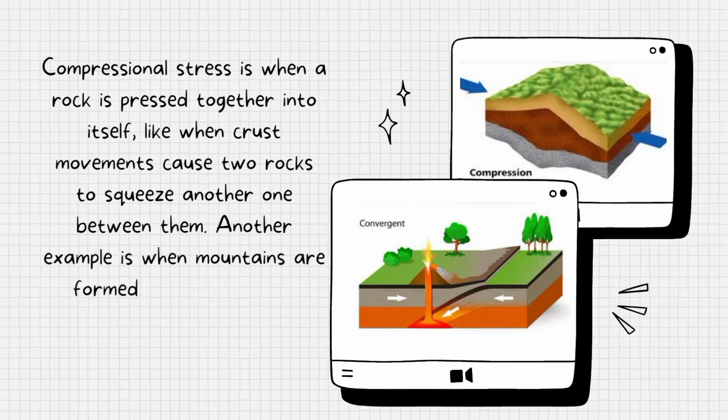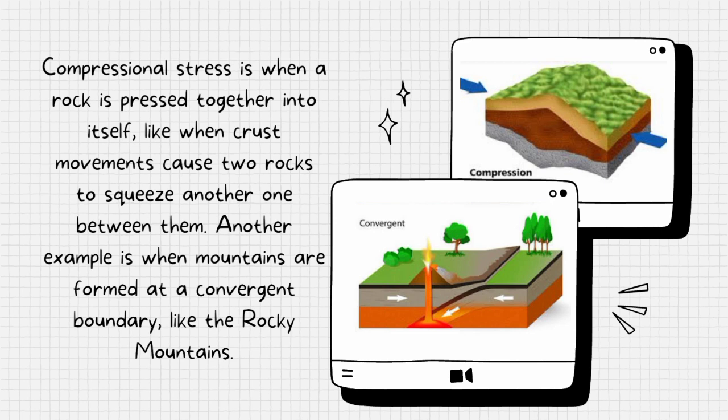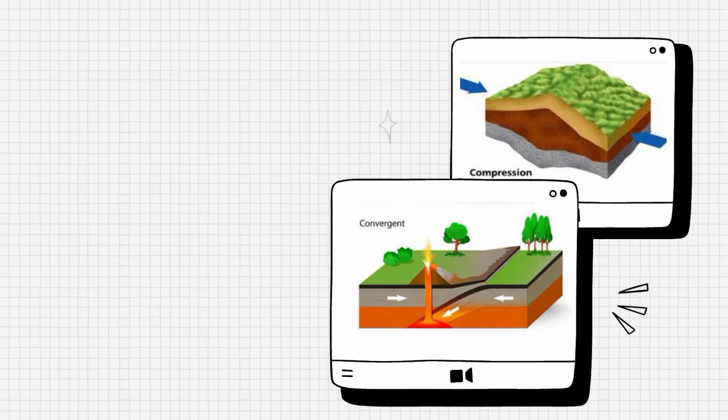Another example of compressional stress is when mountains are formed at a convergent boundary, like the Rocky Mountains.